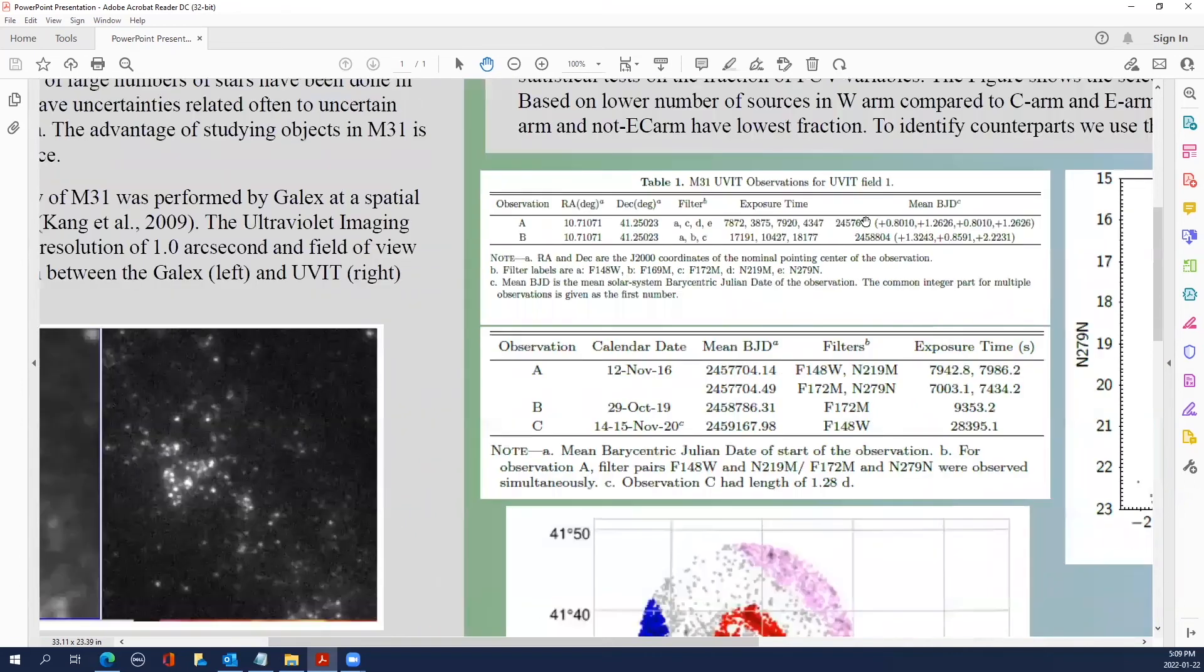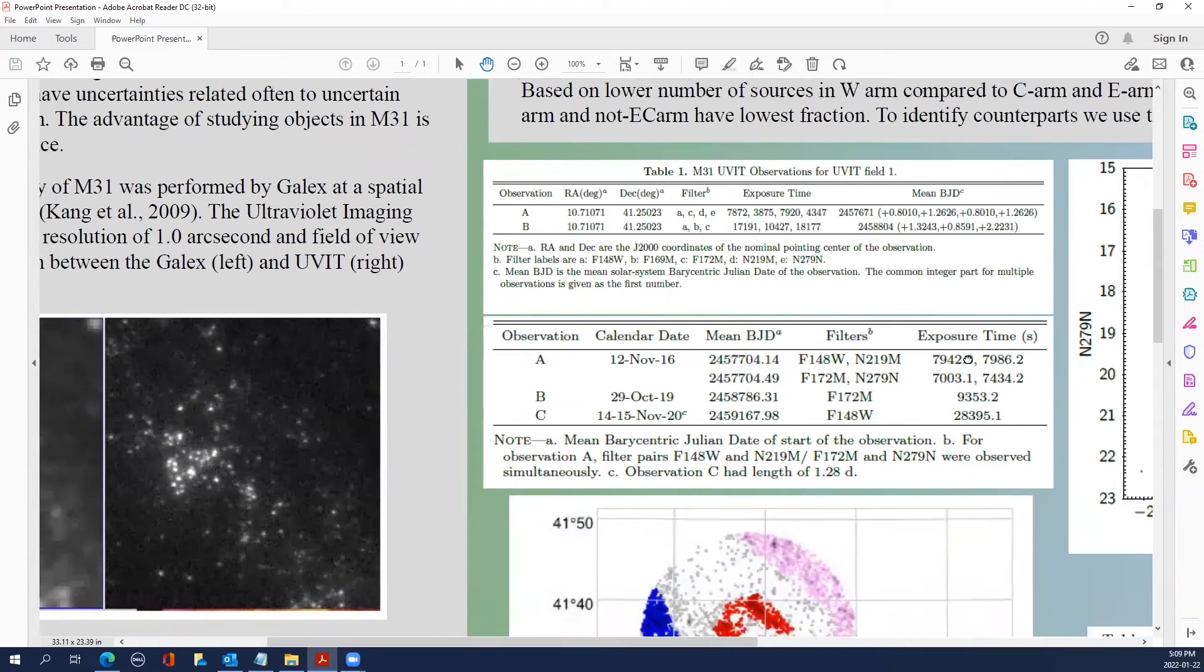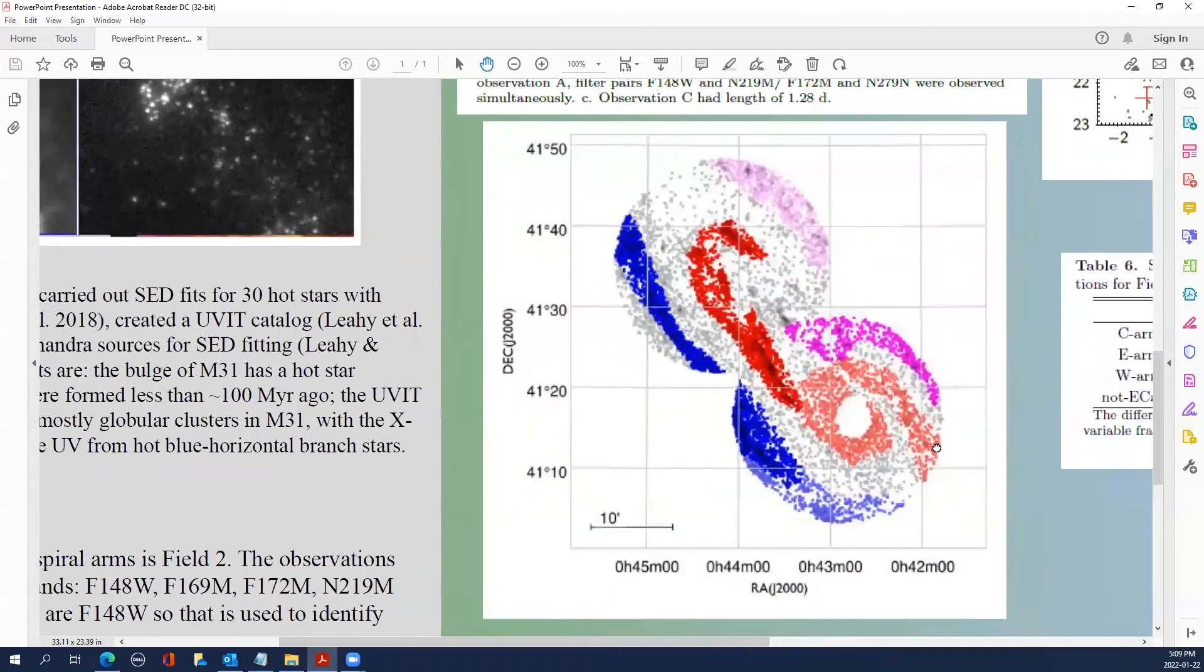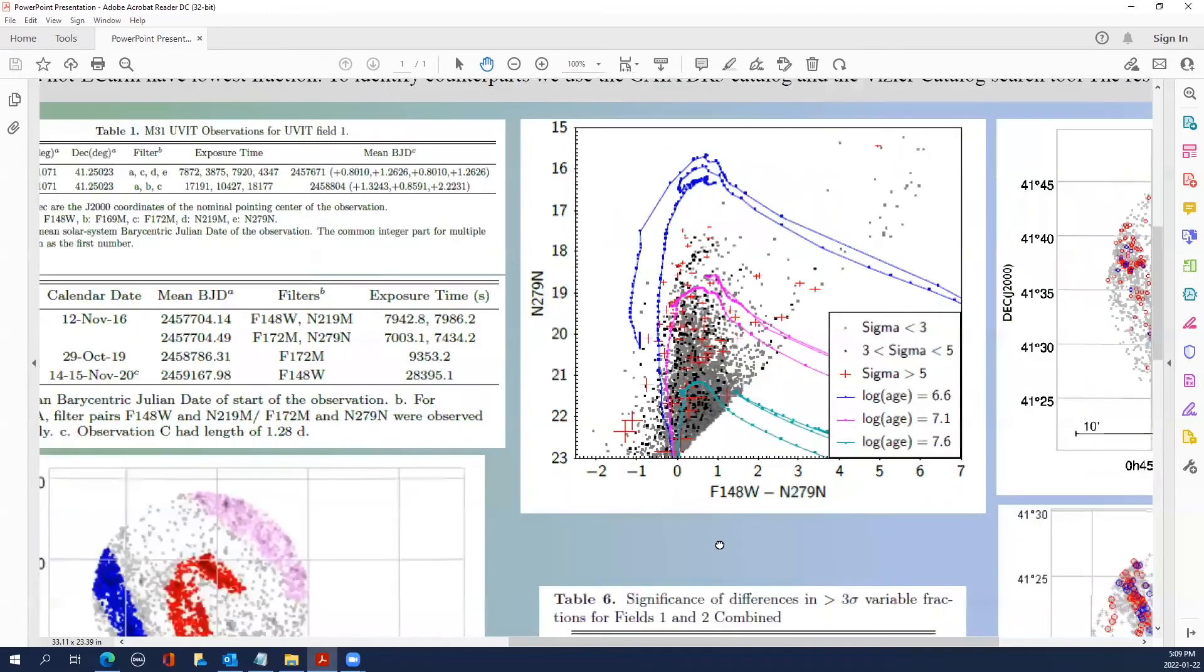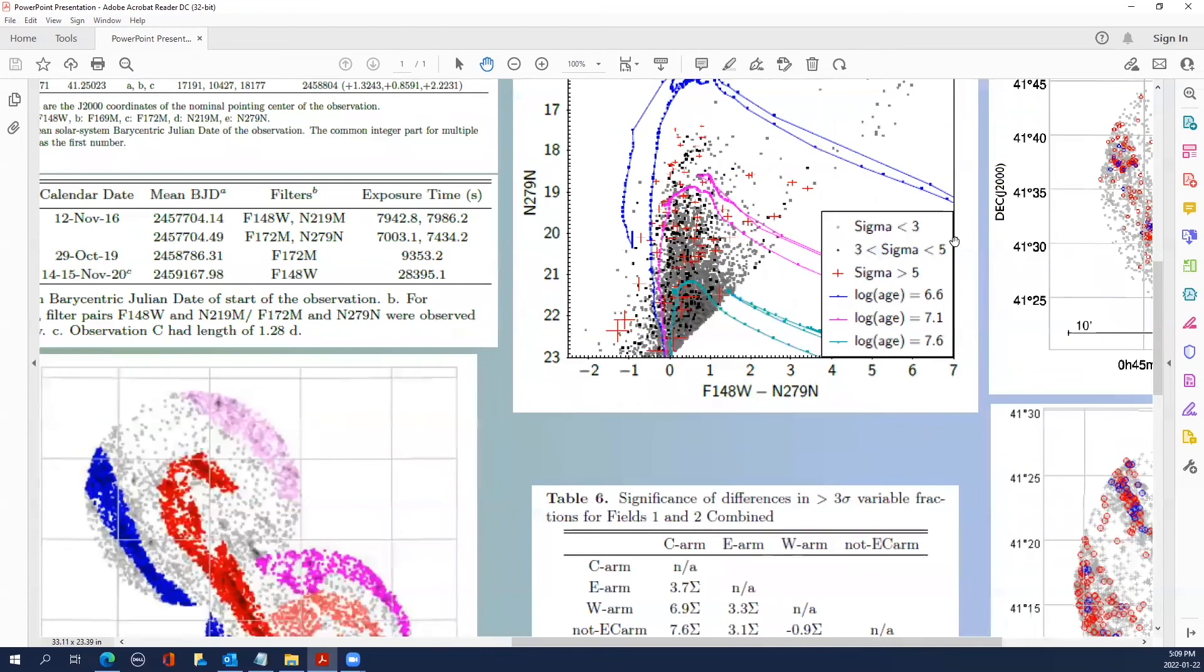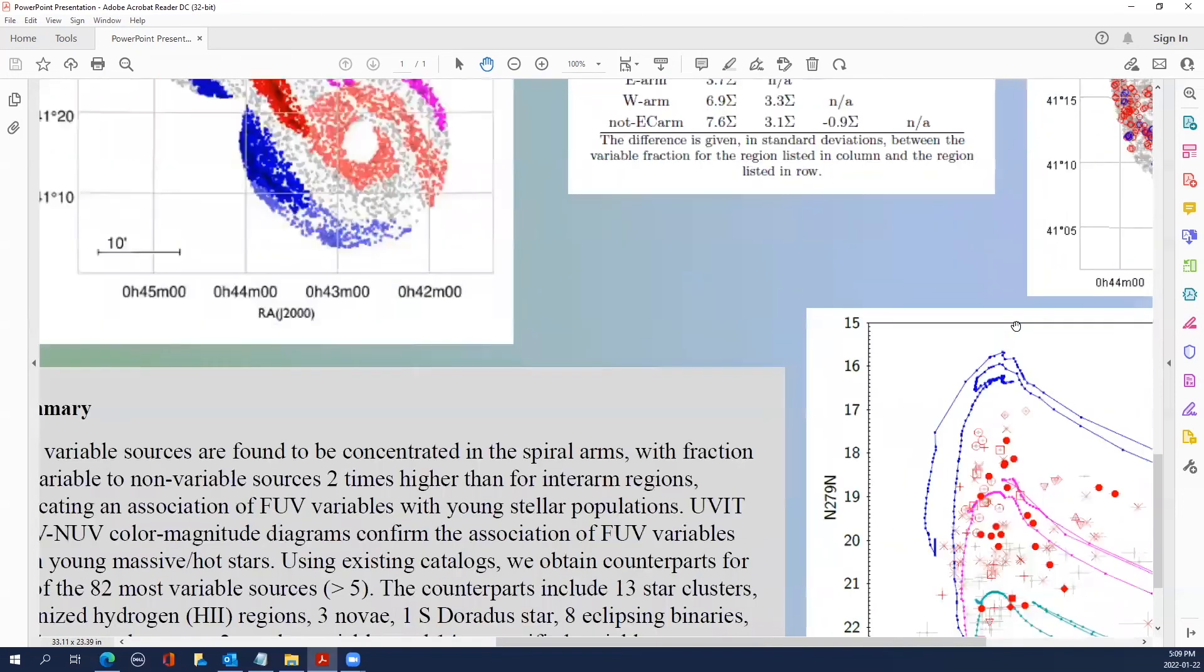We have multi-epoch observations. For the bulge field, the two epochs are separated about three years. For the northeast field, the two epochs are separated by about four and a half years. With the point source catalogues for both epochs, we can identify variables at 3-sigma level and 5-sigma level. Here we plot the variables on a NUV-FUV color magnitude diagram along with stellar isochrons. We can see most of them are consistent with young stars between 30 and 300 million years old.